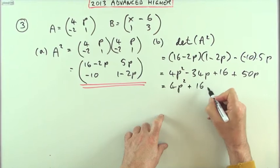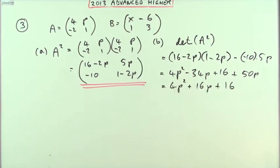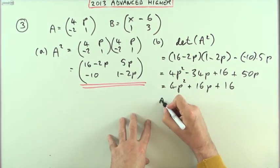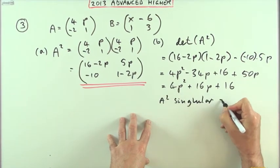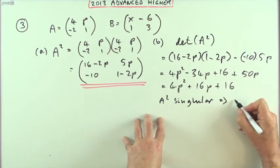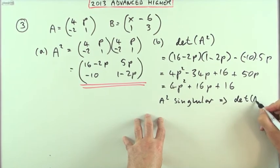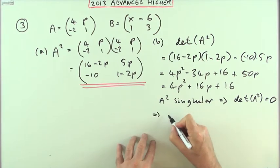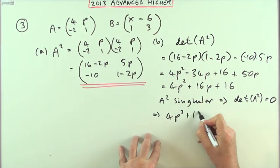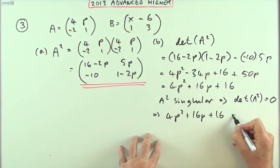Now it said A squared has to be singular. Well A squared will be singular if the determinant of A squared equals 0, which means 4p squared and 16p and 16 should equal 0. I'll just drop those 4s, so p squared plus 4p plus 4 should equal 0.